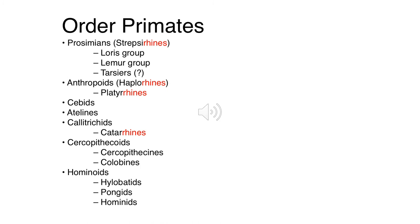You should recognize this slide - it's our order of primate slide from the last module. Going through the primate order, we have our prosimians classified as Strepsirrhini, which include our lorises, our lemurs, and our tarsiers. We also have our anthropoids, which are our Haplorhini, and you should be able to find both on your taxonomy chart.